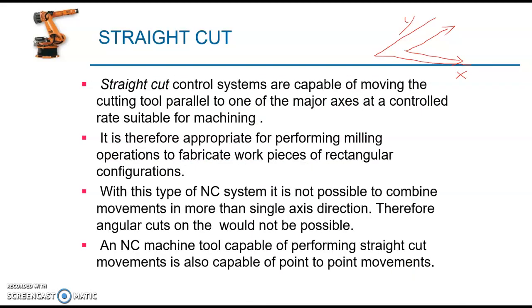While in straight cut control systems, which are capable of moving the tool parallel to one of the major axes at a controlled rate suitable for machining, it is possible to move the tool at a time in a particular direction only, either in X-axis direction or in Y-axis direction. Combined movement is not possible, so we can't use this control system for moving the tool in an angular direction. This angular direction is not possible because that involves the combined X and Y direction movement, which is not possible. Either we can have an X direction movement at a time or a Y direction movement at a time. So this control system is used for cutting straight parts, straight sides, either parallel to Y-axis or X-axis.